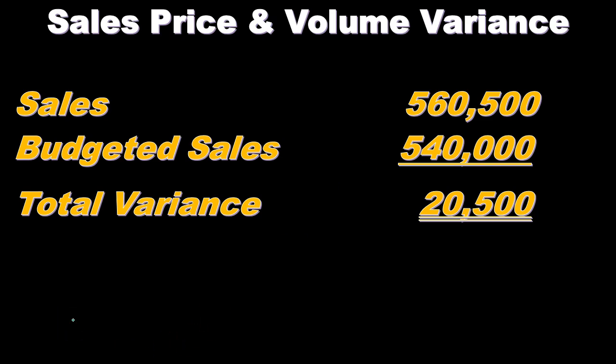However, there are a couple of different things we need to break out in order to make the best decision. Because this $20,000 difference in total could be due to two different things: did we sell a different number of units than we were budgeting to sell compared to what we actually sold? And the other item would be, did we have a change in the price — did we budget one price and sell it for another price? This is one way we could break out this $20,500 into those two factors.